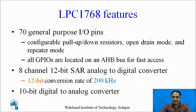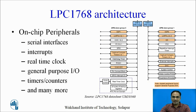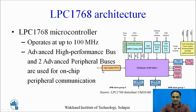There are 147 general purpose input/outputs, having configurable pull-up and pull-down resistors, open drain mode, and repeater modes. All GPIOs are located on the AHB bus for fast access. If you go back to the architecture, you will see that all the GPIOs are directly connected to the AHB matrix, which makes them very near to the core for fast access.